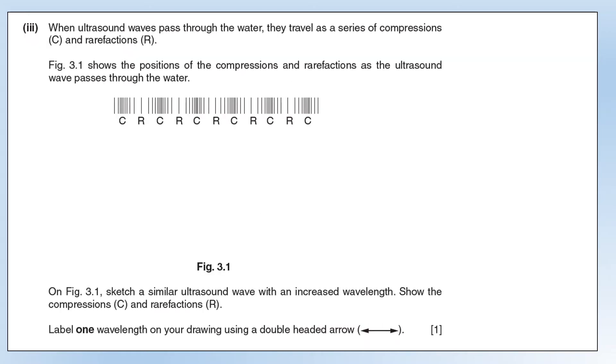Ultrasound waves travel as a series of compressions and rarefactions, as we can see in the diagram. Sketch a similar ultrasound wave with an increased wavelength, again showing the compressions and rarefactions. We've got compressions where there's regions of a high density of particles, rarefactions where there's relatively few. But the wavelength will be the distance between compressions, that's one wavelength.